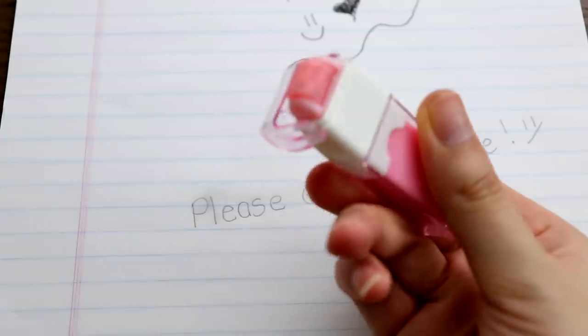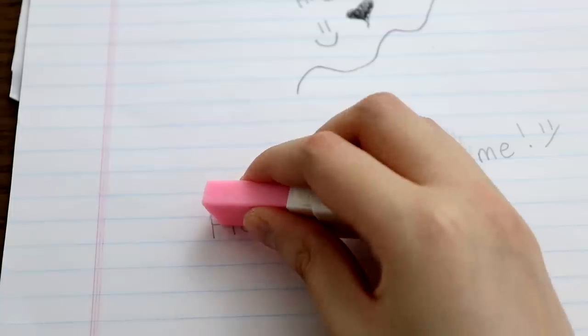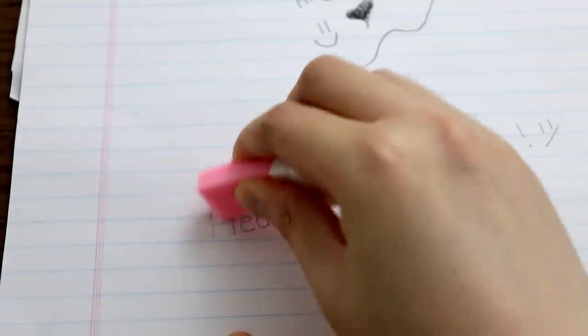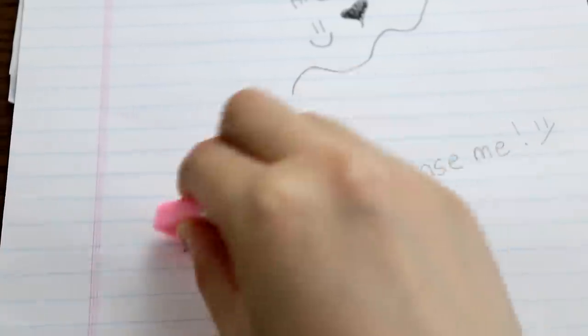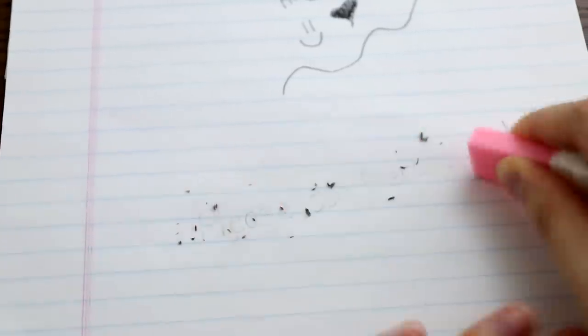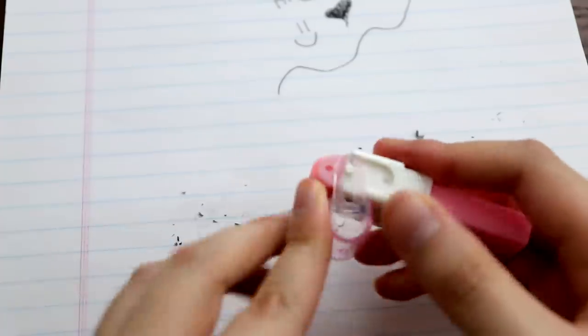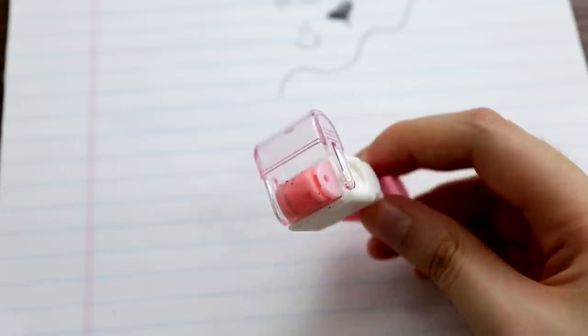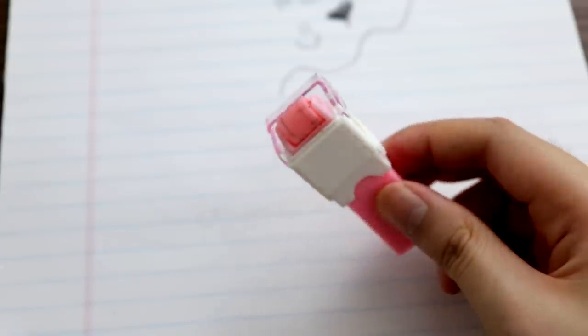I thought that part, the rolly part, was an eraser, but it's actually like a vacuum for your shavings. My mind is blown. If you're lazy and you're not near the trash can, this is perfect for you. This is perfect for everyday use because of the convenience of just rolling away your eraser shavings.